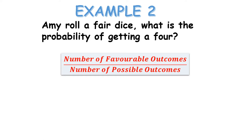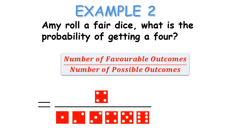Let's look at a dice. Amy rolls a fair die - what is the probability of getting a 4? There is only one 4, and all possible outcomes are 1, 2, 3, 4, 5 and 6. So it has a 1 in 6 chance of rolling a 4. All of the numbers on the dice have an equal chance of appearing on a fair dice.